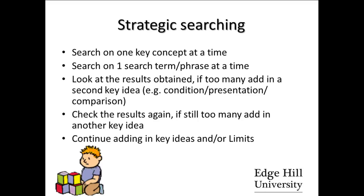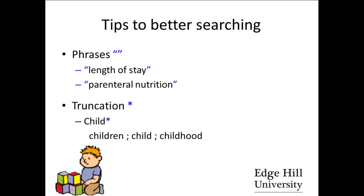Search on one search term or phrase at a time in order to avoid spelling errors. Continue adding in your key ideas or limits until you reach a number that you're happy with. Some useful tips for searching include phrase searching: if you use double quotes around a phrase, it will search for that particular phrase rather than for separate words within the titles and abstracts of records in the databases.